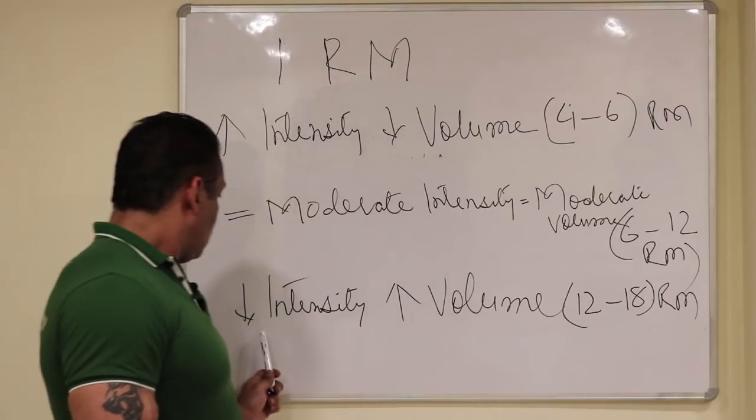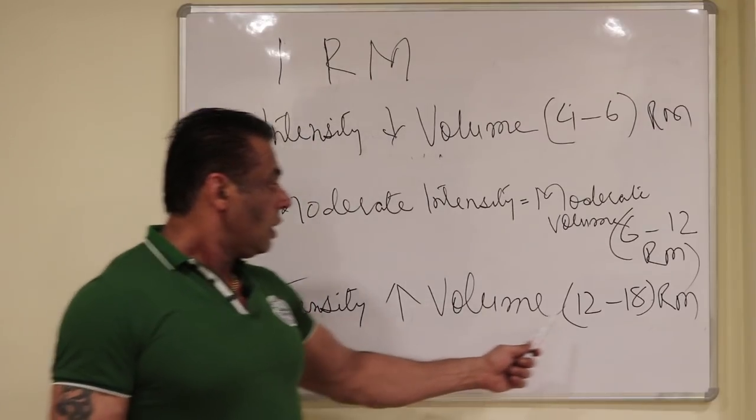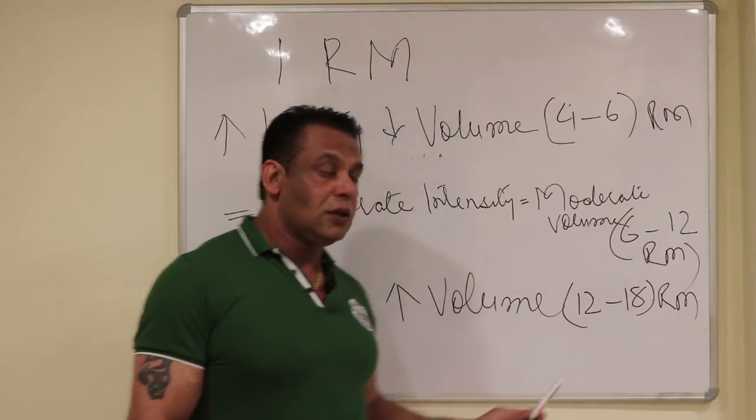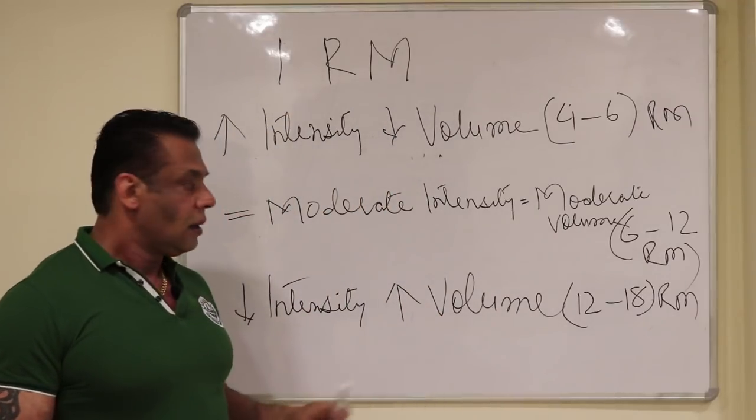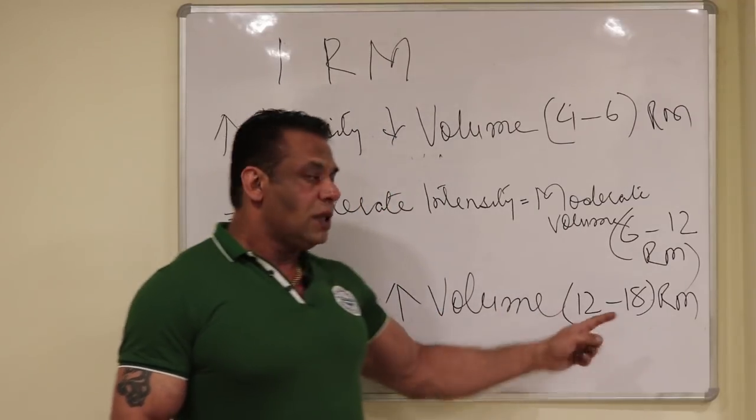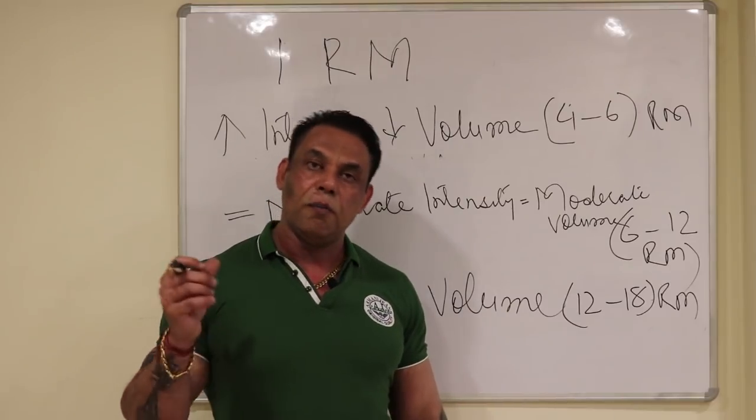And the third is low intensity, high volume, 12 to 18 repetition max, that is also called muscle endurance training. Now in 12 to 18 repetition max, there is a lot of blood flow in the muscles.